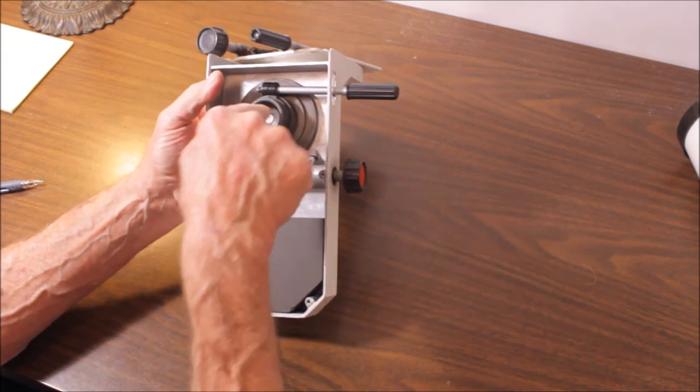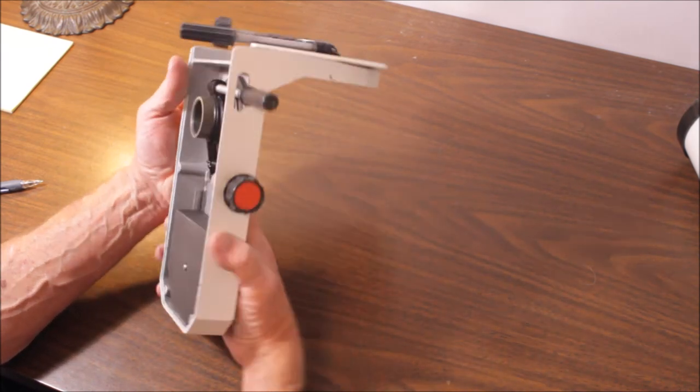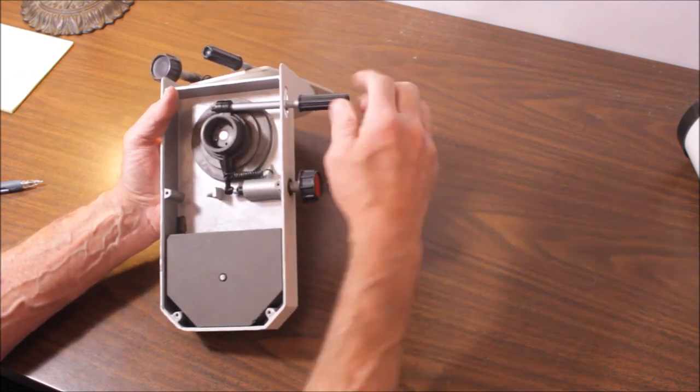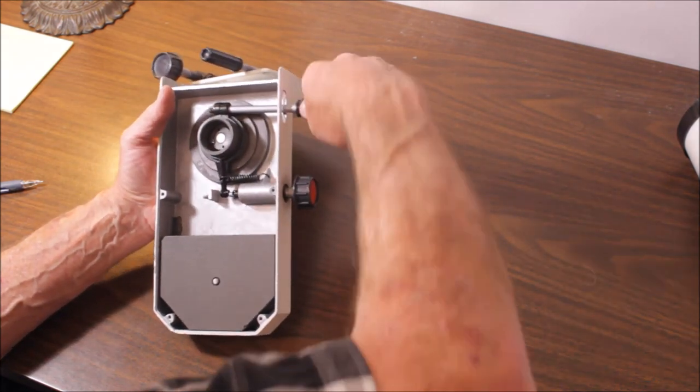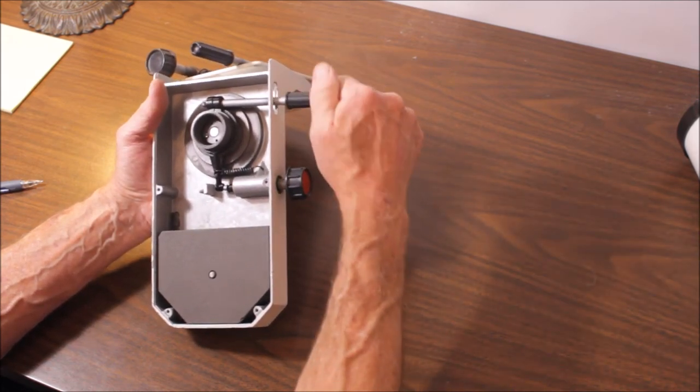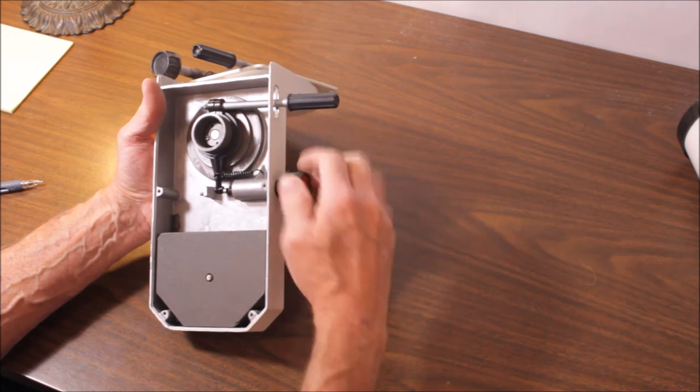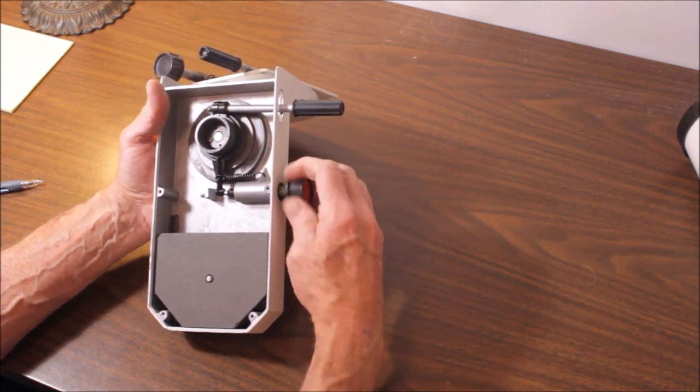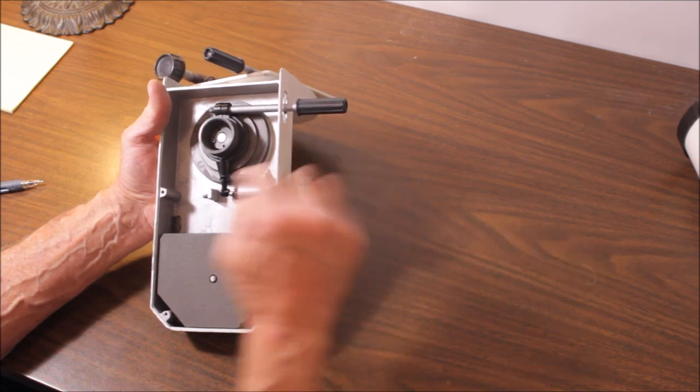This would be the right ascension. This goes right to the polar axis right here. And this is the right ascension and declination slow-mo. This is the locking mechanism for the right ascension. You lock it down like so. Clamps onto that. And you have a little bit of a tangent spring deal here like that.